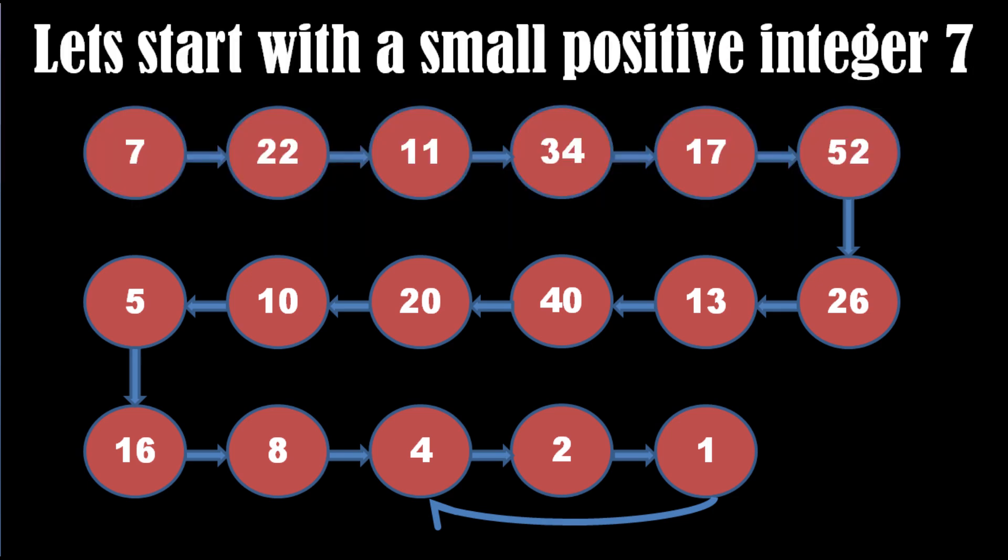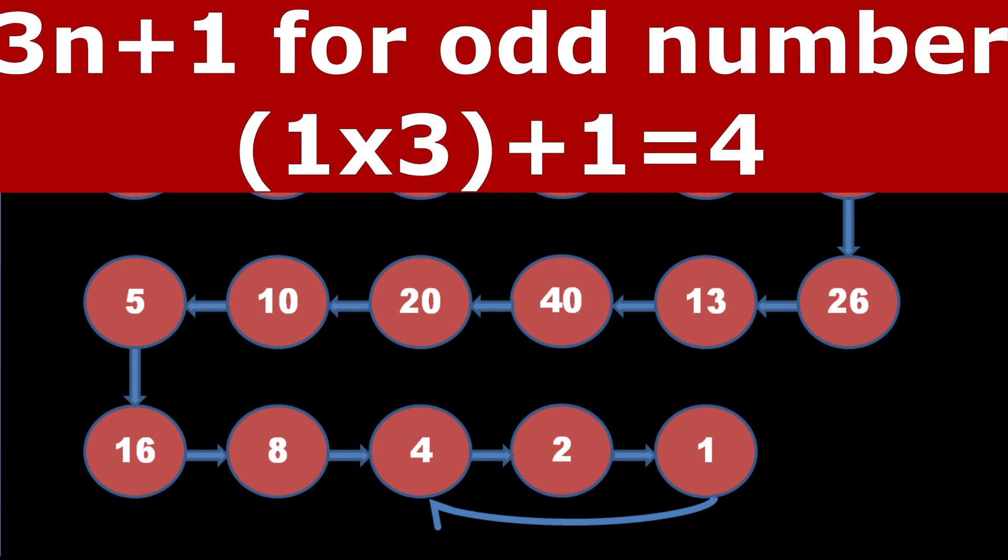But you don't want to stop at 1, so you again apply the rule. As 1 is an odd number, you multiply it by 3 and add 1. You get 4.